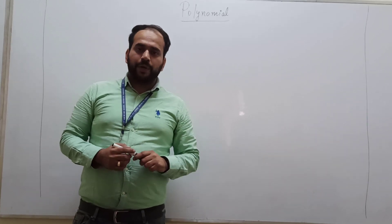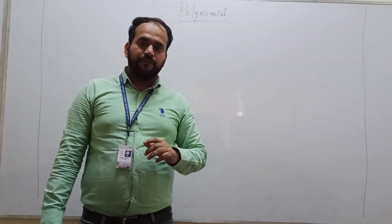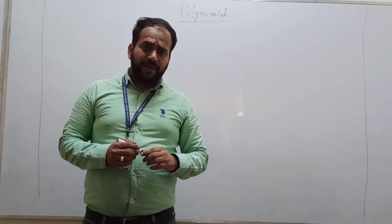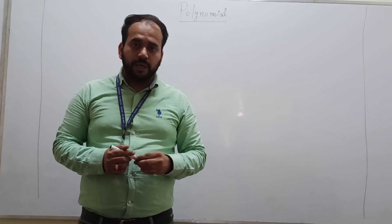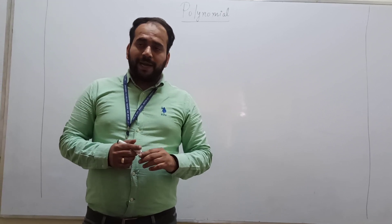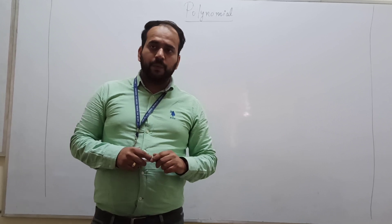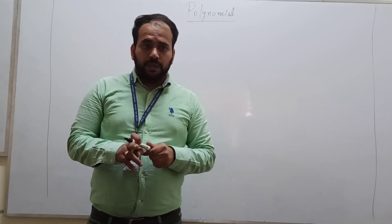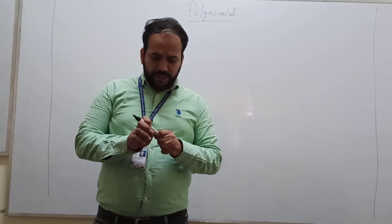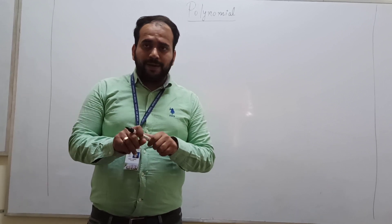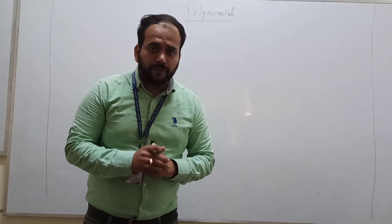Hello students, today we are going to discuss Chapter 2 of NCERT — Polynomials. We have already done this chapter in Class 9. You know how to find the zeros of a polynomial and how to apply the division algorithm. But in this class, we are going to find the geometrical interpretation of a polynomial and determine the number of zeros just by looking at the graph.